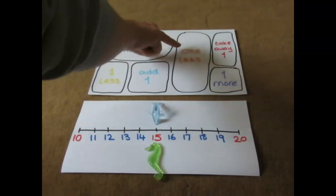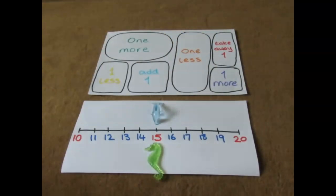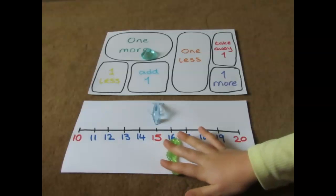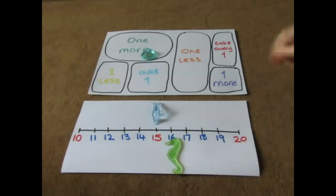Take away one. One. And I've written the one in less in words. So you'll see on the mat I've varied the vocabulary and how the numbers are represented. Just to vary it up a little bit. Right, are you going to throw your gem on and see what you land on?